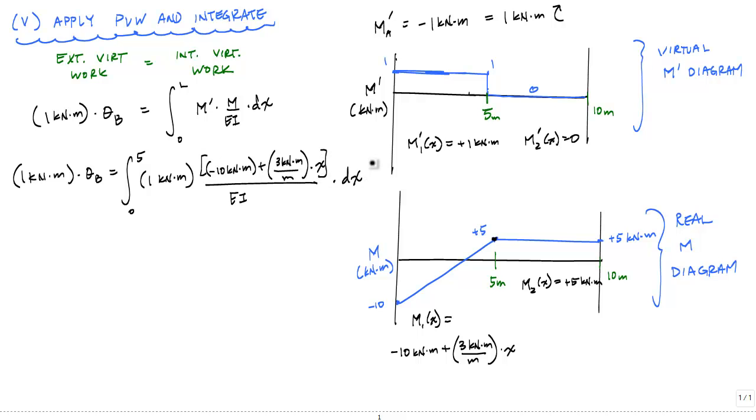And technically, because we have to integrate for the entire length of the beam, this will be plus the integral from five to ten meters. The virtual moment is zero, so that's going to make things easy. The real curvature is just five kilonewton meter over EI times dx. And we know because we're integrating over zero, this term is not even going to come into play. So next I'm going to integrate this and evaluate for θ_B.